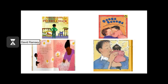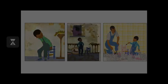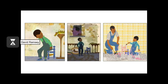In Week 1, children will be introduced to Peter's family in Peter's Chair and Daniel's family in Oonga Boonga. Many children can relate to Peter, who feels conflicted with the arrival of his new baby sister Susie. Feeling replaced, he decides to run away from home, but has a change of heart when he helps his father paint Susie's chair.